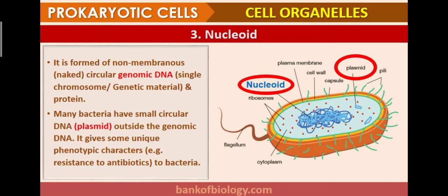The nucleoid is formed by non-membranous, naked, circular genomic DNA — a single chromosome of genetic material and protein. This nucleoid has no membrane; the circular genomic DNA is openly present. Many bacteria also have smaller, circular DNA called plasmids outside the genomic DNA. Plasmids give unique phenotypic characters — for example, resistance to antibiotics in bacteria.